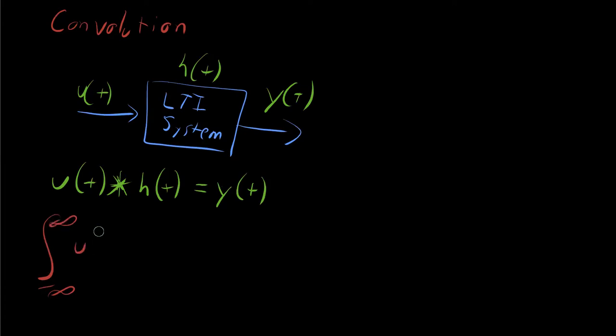Of, for example, u of t times h of t minus tau. Sorry, this should be functions of tau. u of tau. We're just switching time variables here. h of t minus tau, d tau.